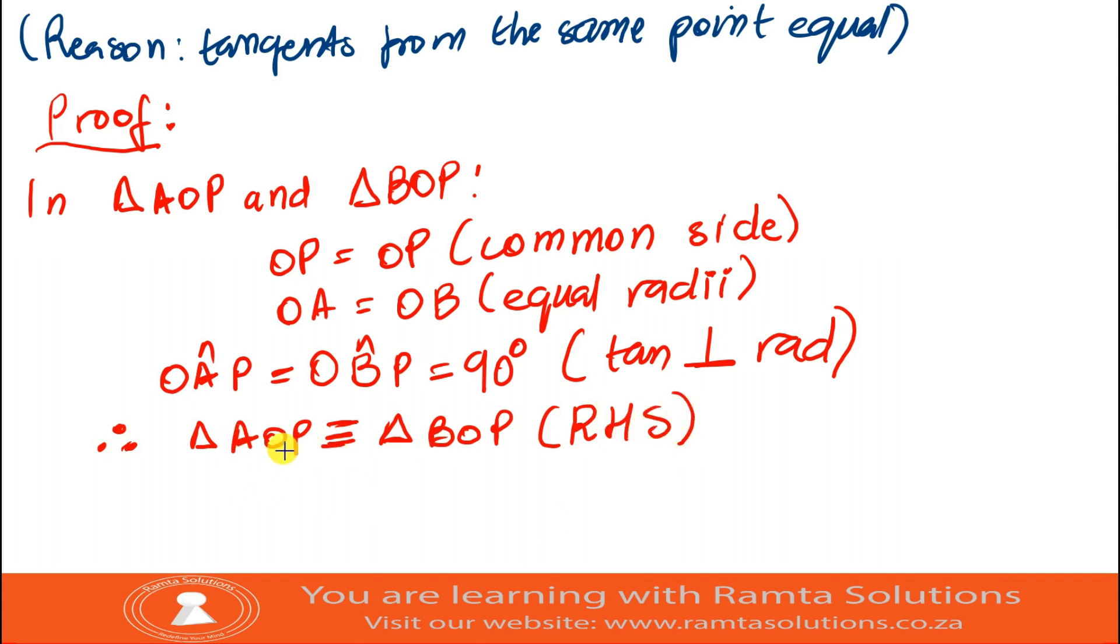What's the reason? The reason is, the right angle, hypotenuse, and a side. Now, since we said triangle AOP is congruent to triangle BOP, we can therefore say, therefore, AP is equal to BP.